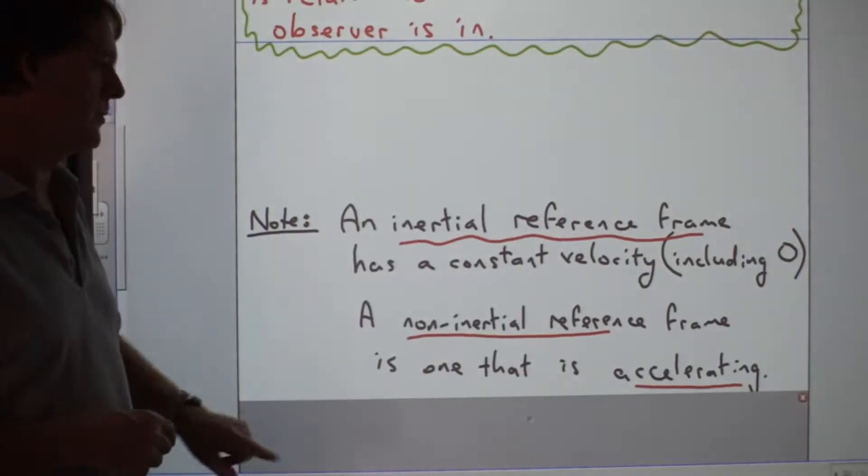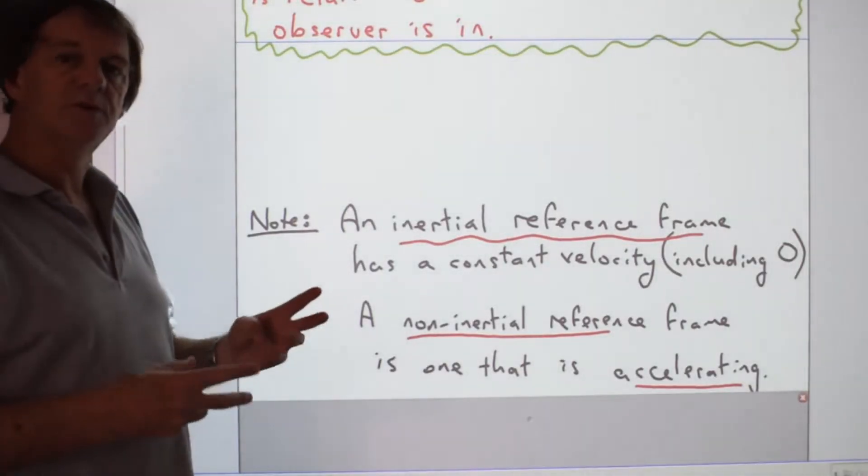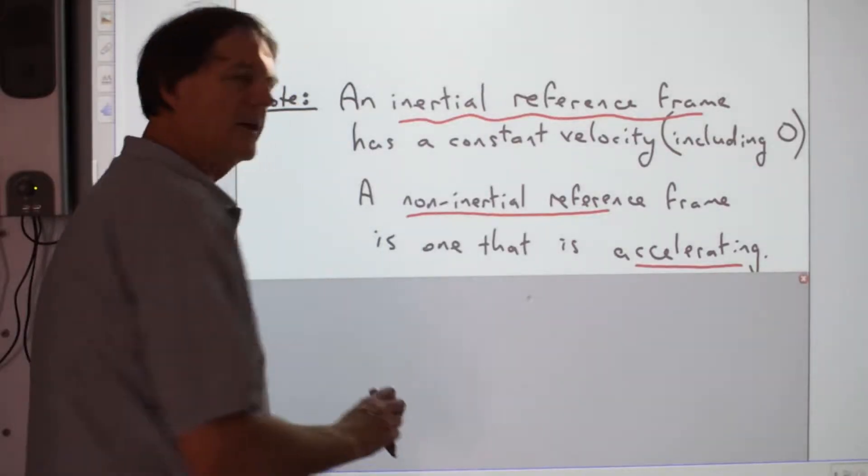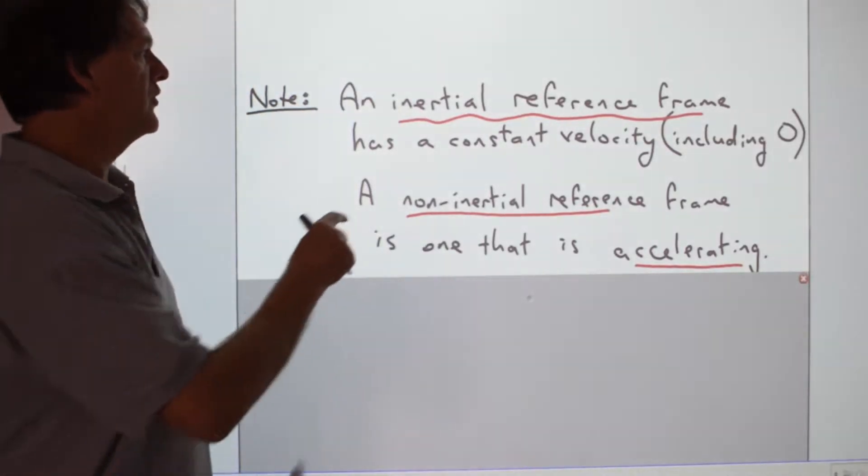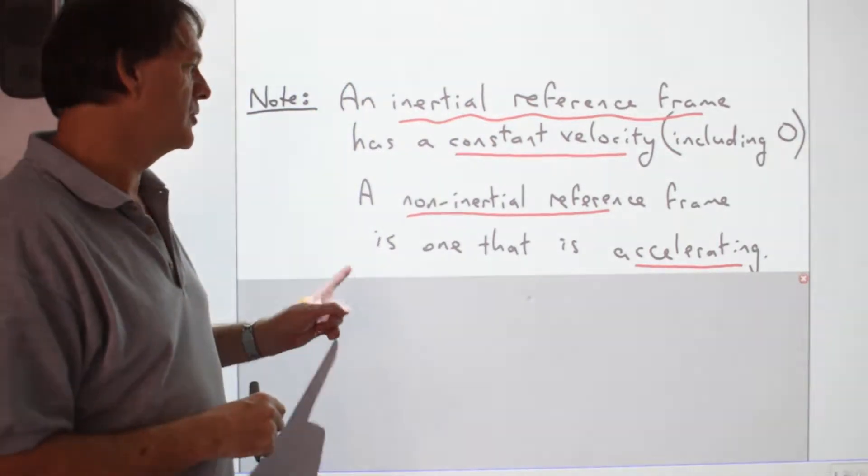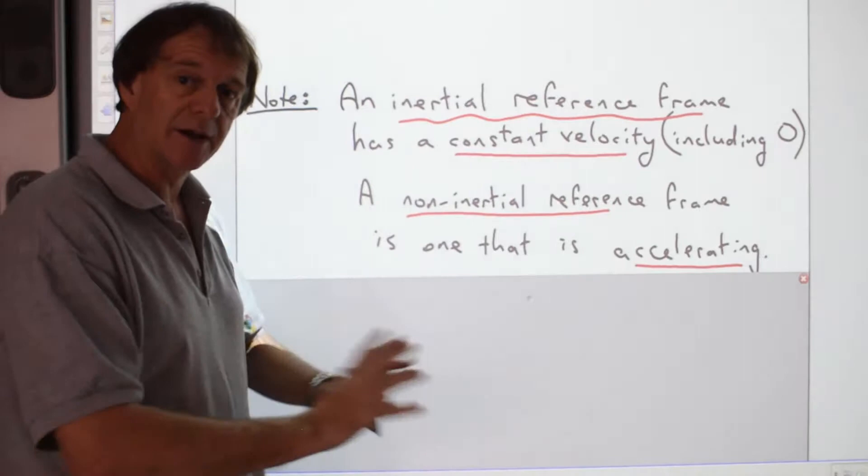Some new ideas here, though, is to distinguish between an inertial reference frame and a non-inertial reference frame. In an inertial reference frame, velocity is constant, and that includes being at rest. In a non-inertial frame, we're actually talking about a situation where the frame is accelerating.